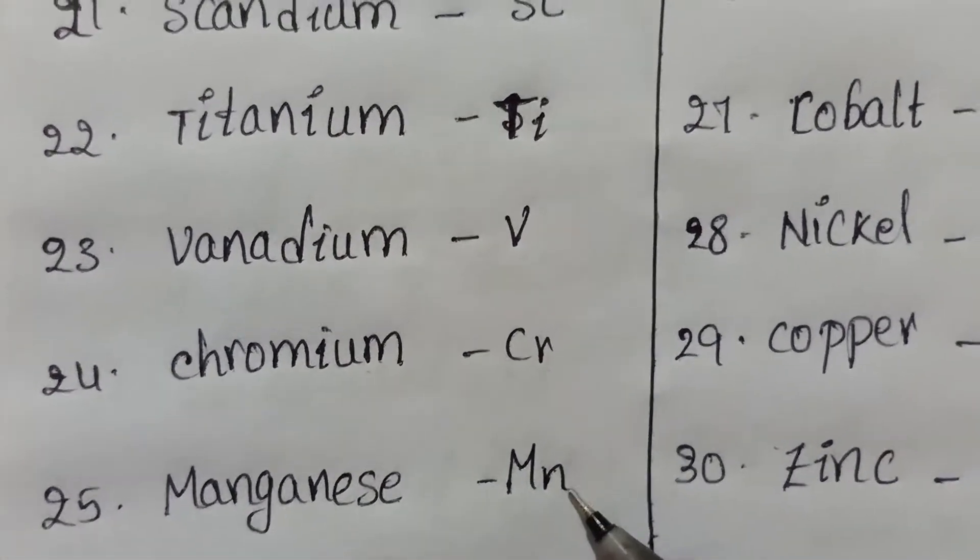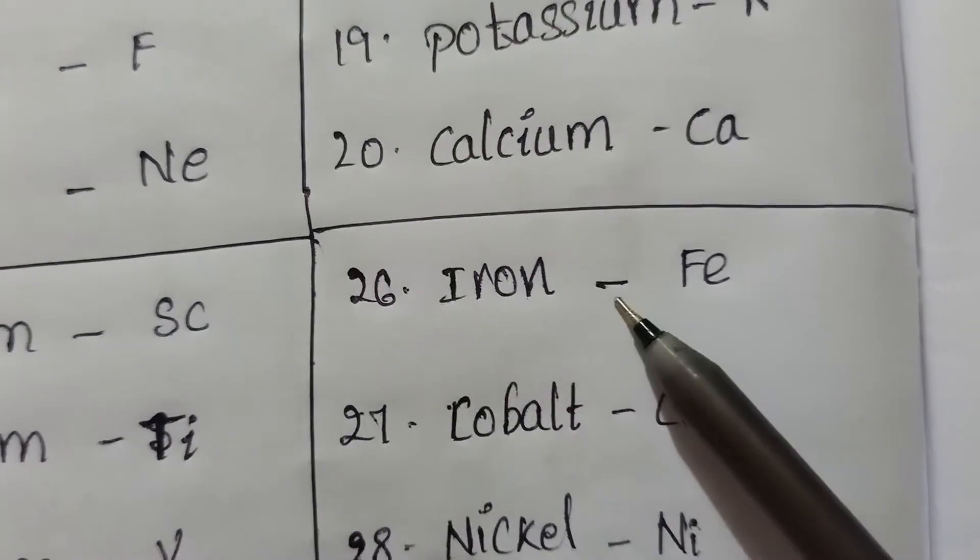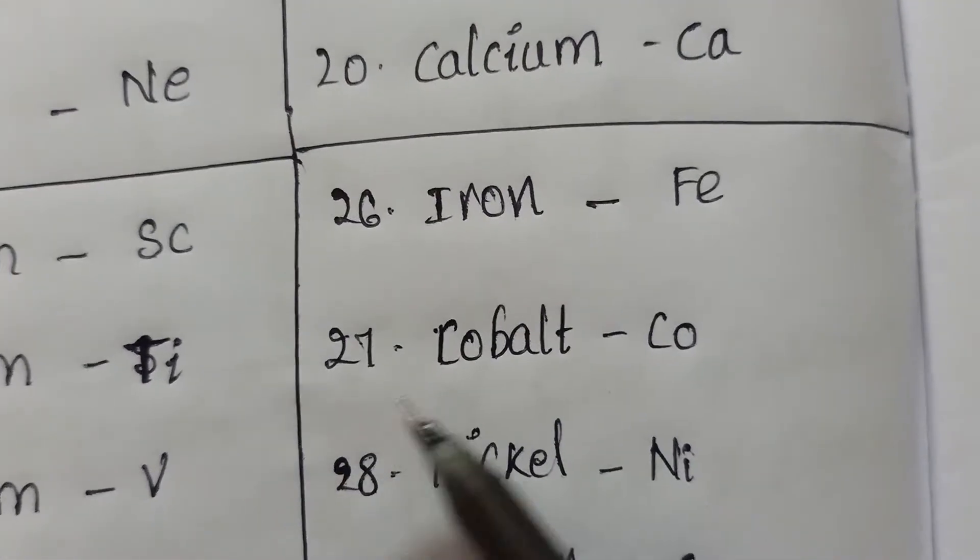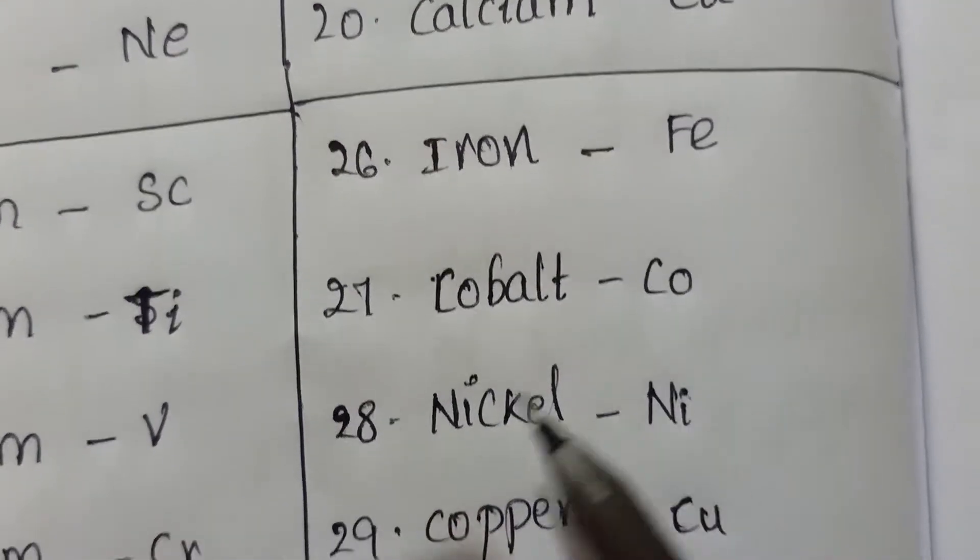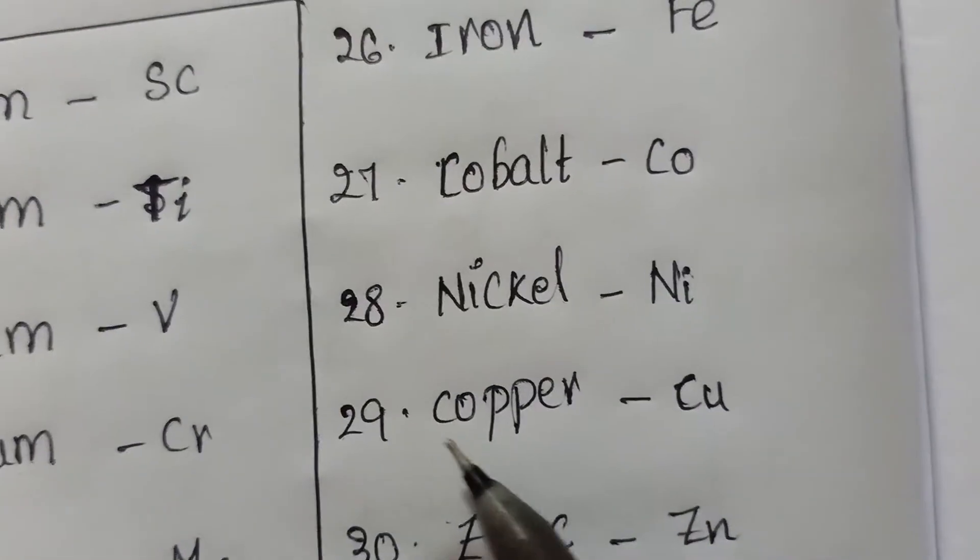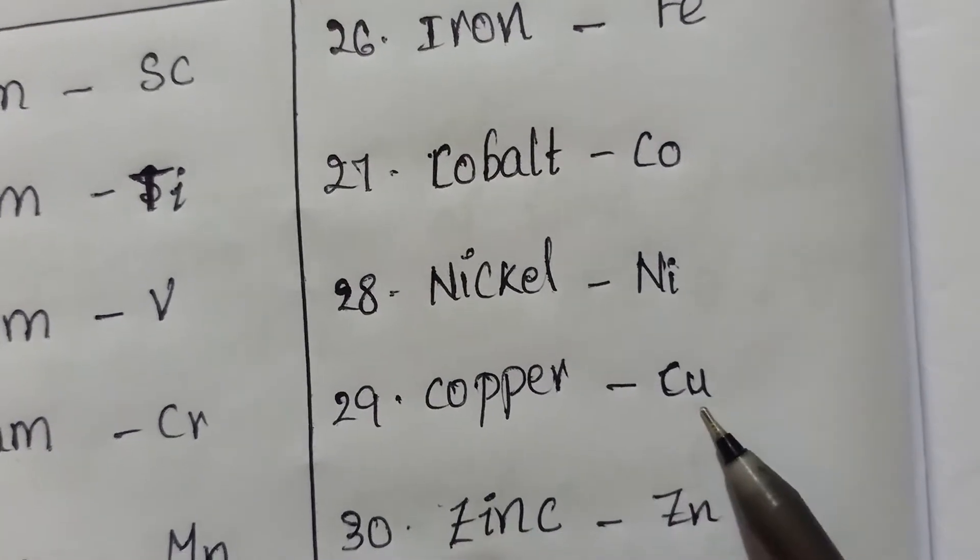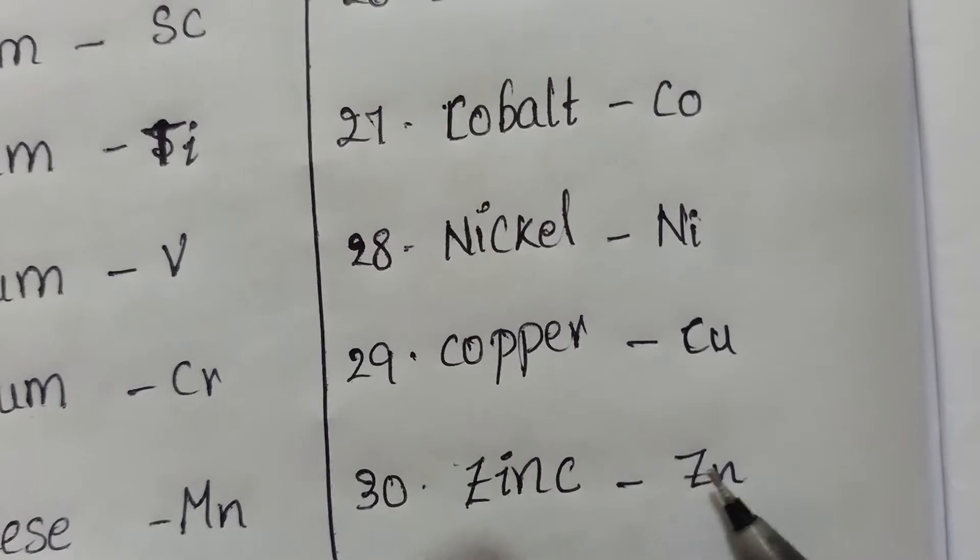Twenty-fifth, manganese, symbol MN. Twenty-sixth, iron, symbol FE. Twenty-seventh, cobalt, symbol CO. Twenty-eighth, nickel, symbol NI. Twenty-ninth, copper, symbol CU. Thirtieth, zinc, symbol ZN.